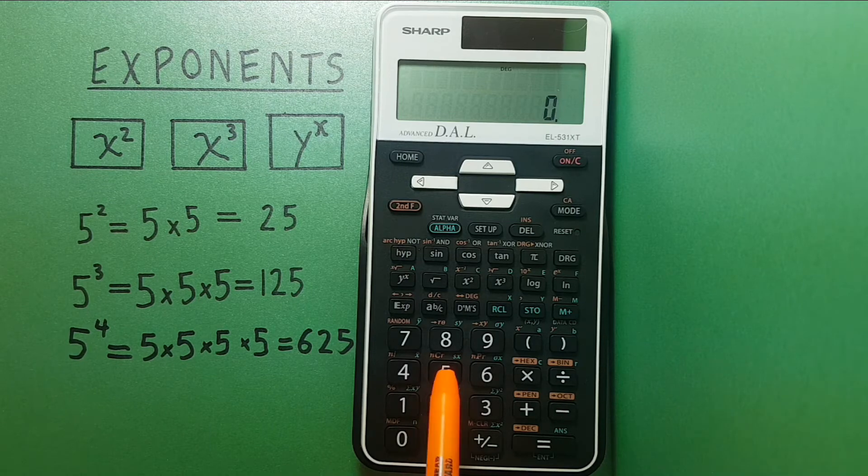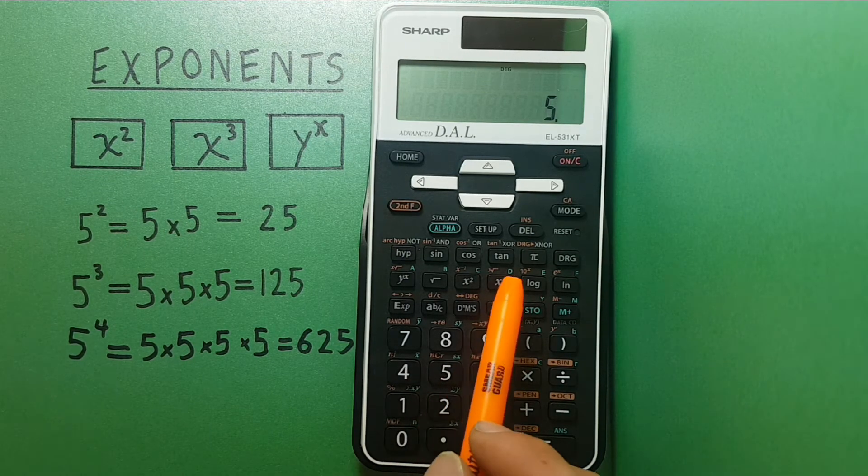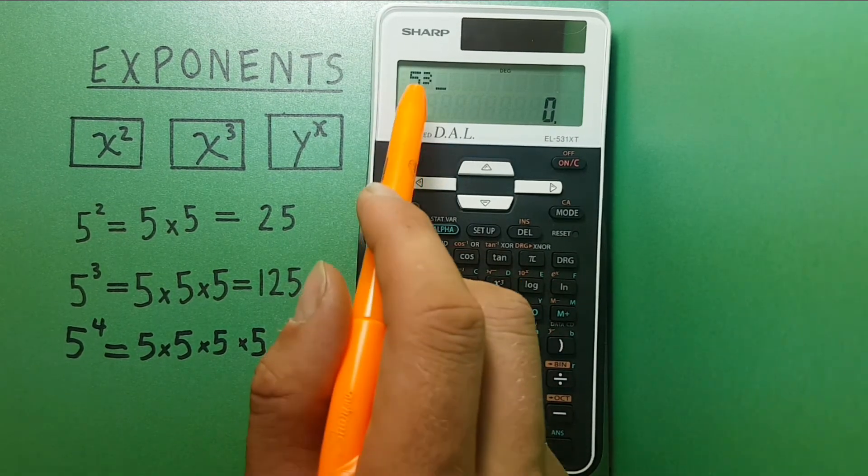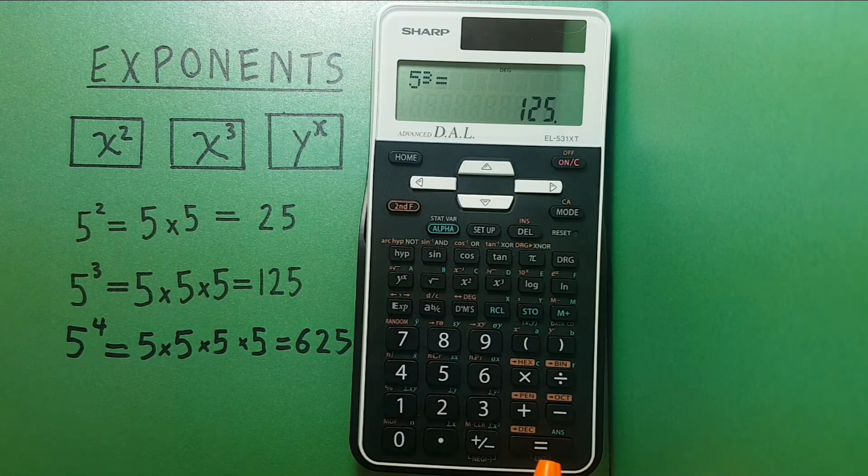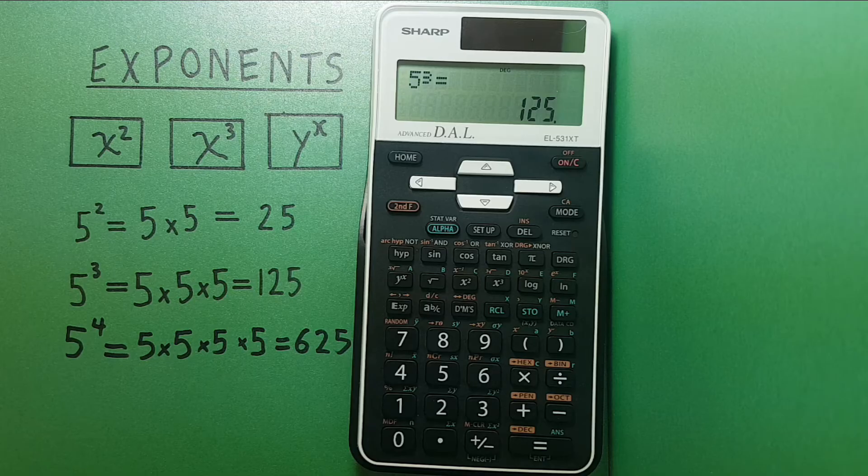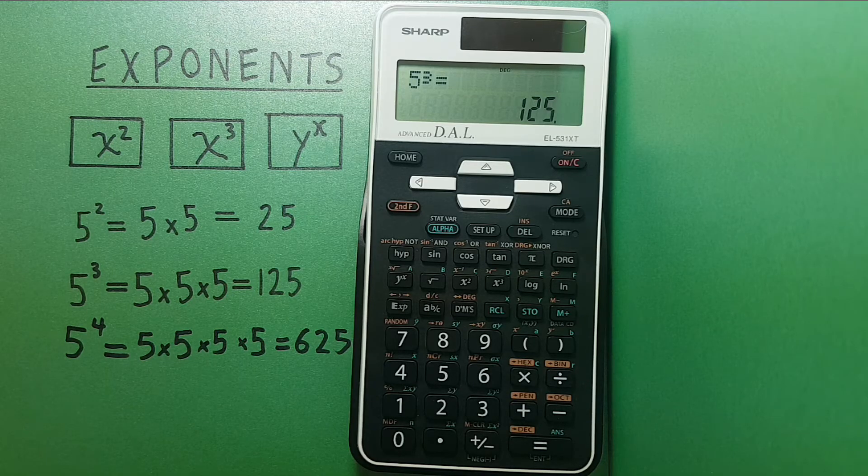So we press the 5 and then the X cubed. We see 5 cubed on the top row and then press equals and get the right answer of 125 on the bottom row.